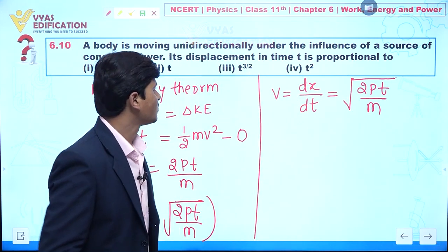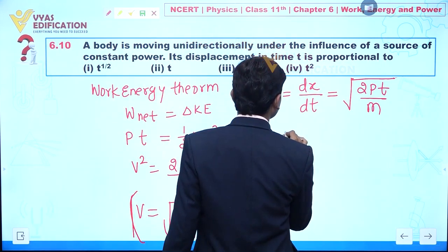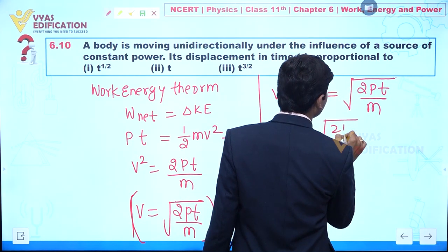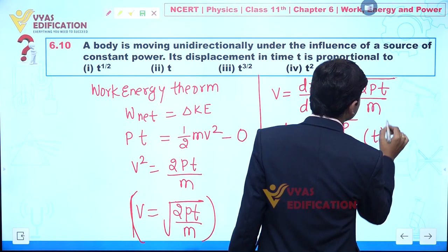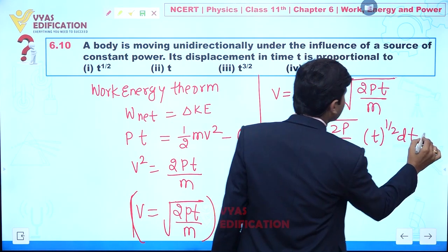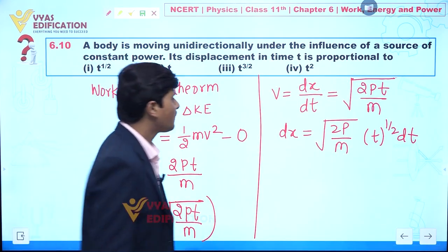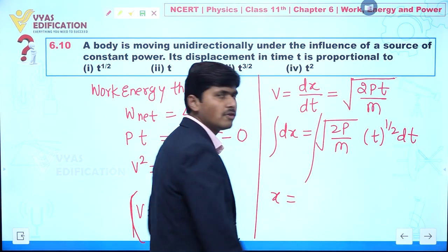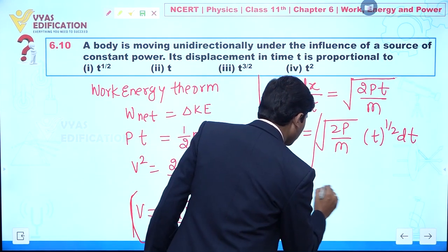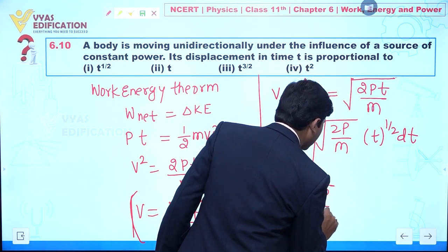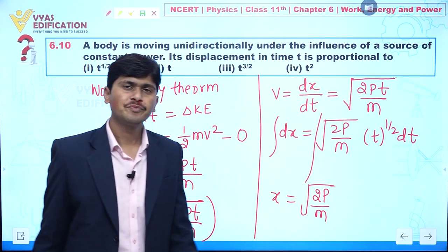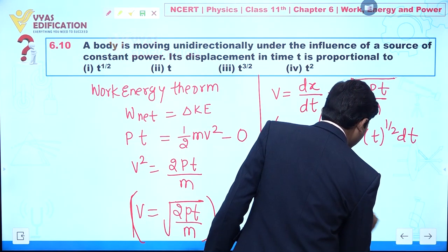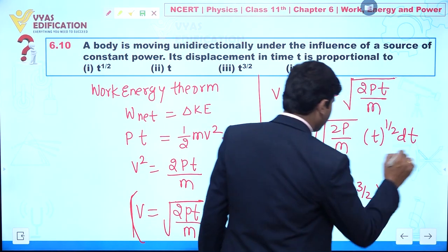So we can write dx equals the square root of 2P/m — taking 2P/m as a constant outside — multiplied by t to the power of one-half, multiplied by dt. Integrating both sides, displacement x equals the square root of 2P/m, and the integration of t to the power one-half gives t to the power 3/2 divided by 3/2.